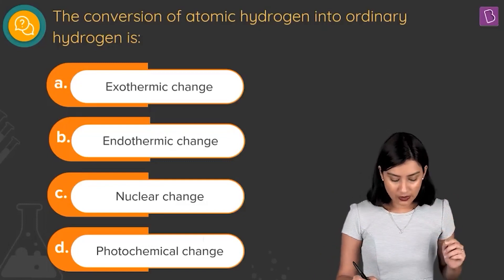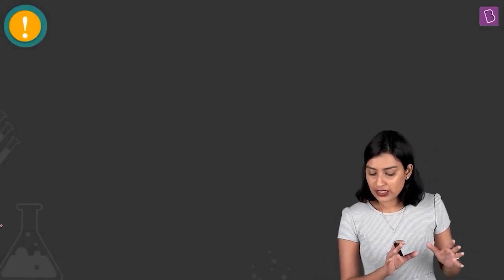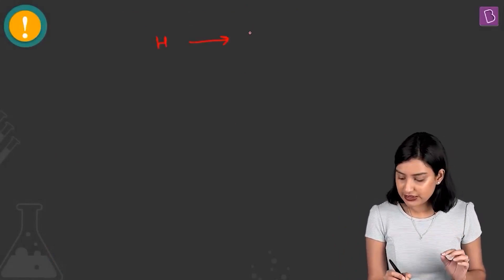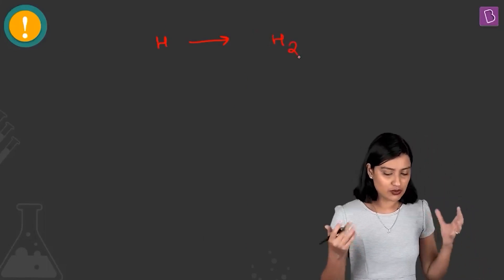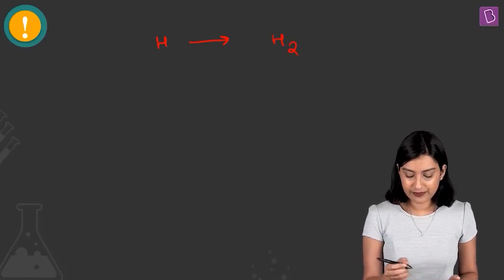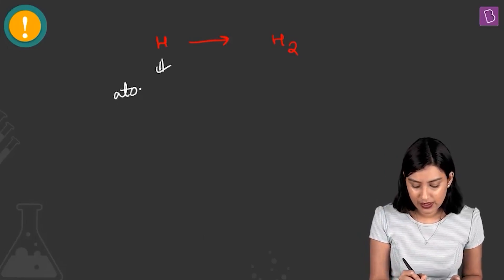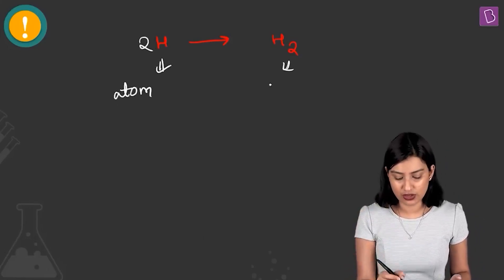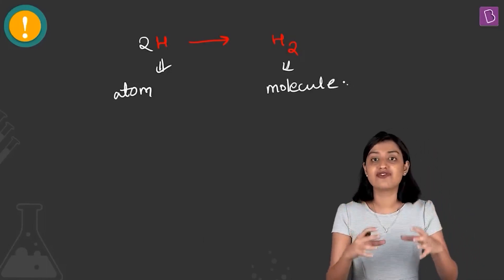Let's dig a little deeper and see what exactly we need to do here. We are talking about atomic hydrogen being converted into ordinary hydrogen. Ordinary hydrogen is nothing but H2 — molecular hydrogen. Initially you have individual hydrogen atoms, and two such atoms will combine to give you a molecule.